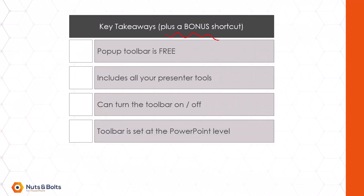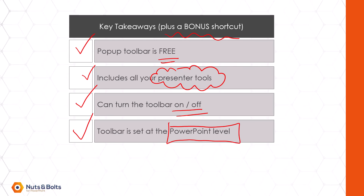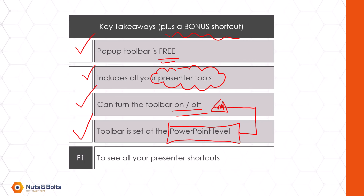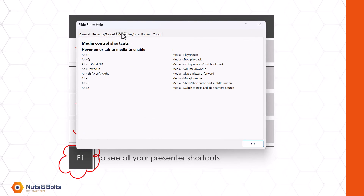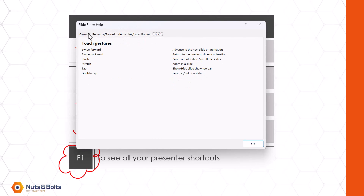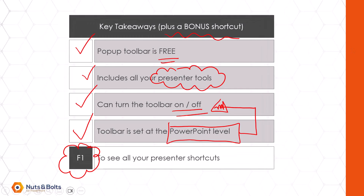A few key takeaways plus a bonus keyboard shortcut for making it this far. The pop-up toolbar is a free default feature of Microsoft PowerPoint where you'll find all your presentation-level tools to help you give a better, more seamless presentation. If it's driving you nuts, you can turn it on or off — just keep in mind it's a PowerPoint-level setting, so it applies to all presentations. Your bonus keyboard shortcut is F1: hit F1 in slideshow mode to get the slideshow help dialog box, which gives you all the keyboard shortcuts you can use while presenting instead of using the pop-up toolbar.